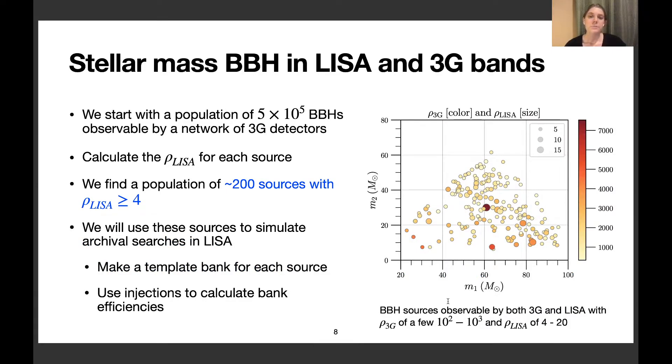We find a population of such events by first starting with a large set of binary black hole samples observable by 3G detectors. For each source, we calculate the LISA SNR and keep only those with LISA SNR greater than 4, which gives us 181 or about 200 sources. These are what we use to simulate archival searches in LISA. For each source, we generate a template bank and then use injections to calculate bank efficiencies. This plot shows the distribution of masses versus the 3G and LISA SNRs for all of the sources we used in this work.